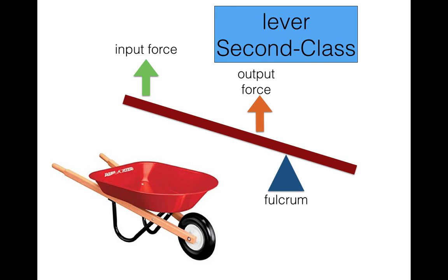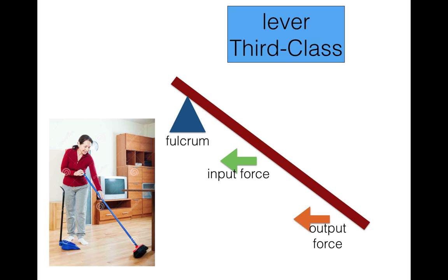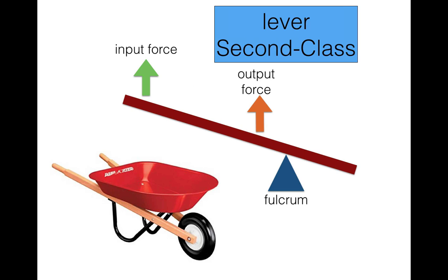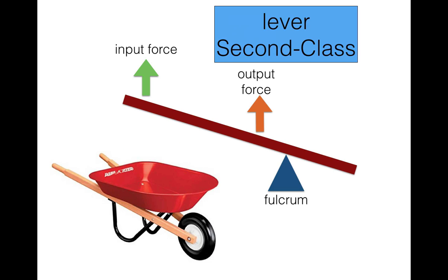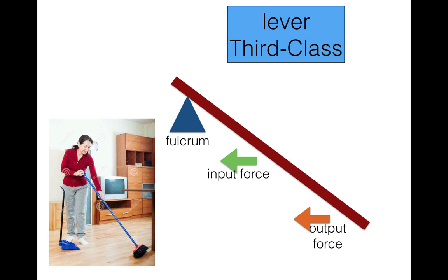Notice that the output force in the second class lever is in the middle — let's call that the second position. Your input force is on the outside, in between you have the output force in the second position, and then your fulcrum. Now look at the third class — that output force is in the third position on the outside. First class has the fulcrum in the middle, and forces are applied in opposite directions. In second and third class, input and output forces are in the same direction, but the output force is in the second or third position respectively.